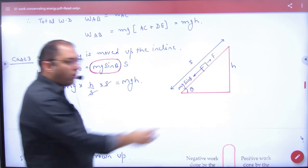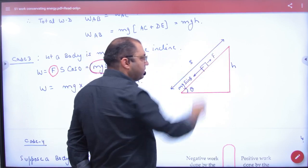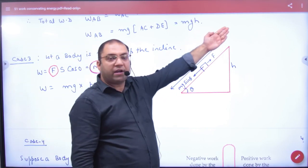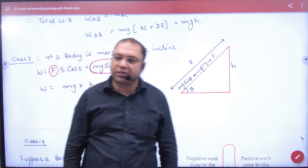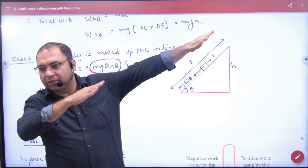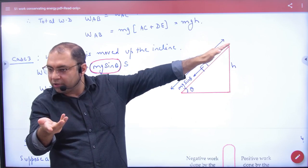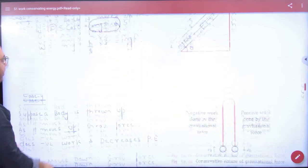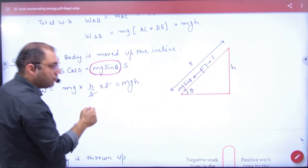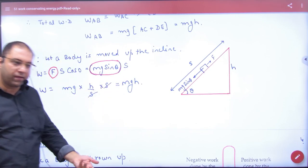Inclined plane pe body ko upar chadha at angle of theta. To body niche aa rahi thi mg sin theta. Or ye displacement S hai. To agar inclined plane pe body ko upar leke jane hai to kum se kum force upar kitni lagani padegi ki mg sin theta. To body ko upar chadhane ke liye force upar kya lagi? Mg sin theta. Displacement kitni hai? S. To work done kya? Mg sin theta into S into cos zero. To answer kya aayega? Mg sin theta into S. Lekin yaha par sin theta kiske equal hai? H upon S. S and S cancel. Answer phir se kya gaya? Mgh.